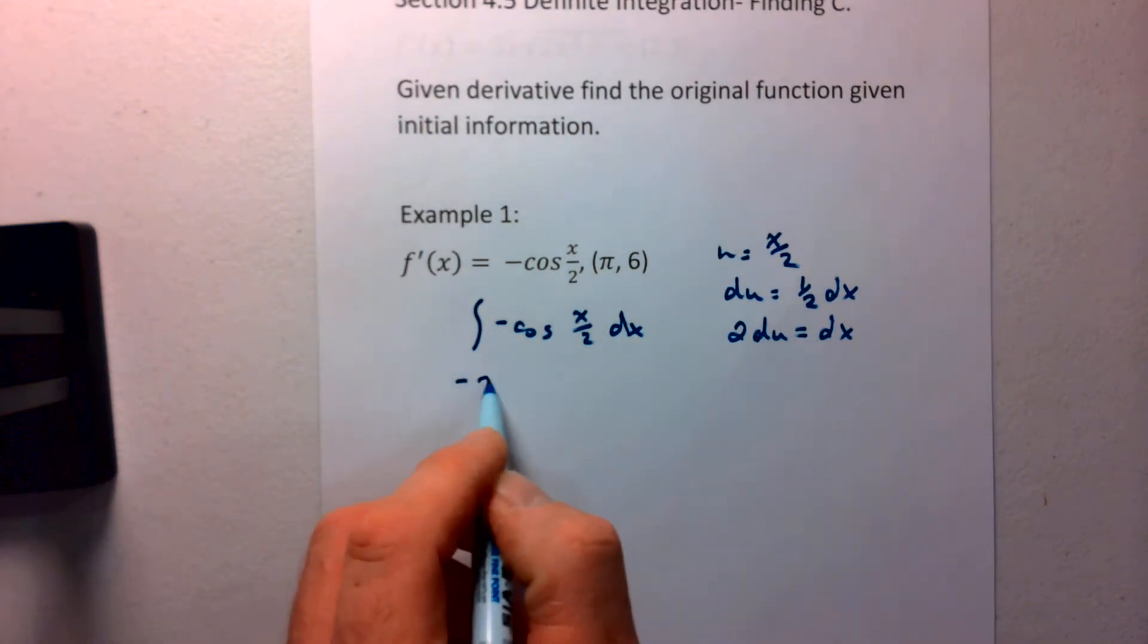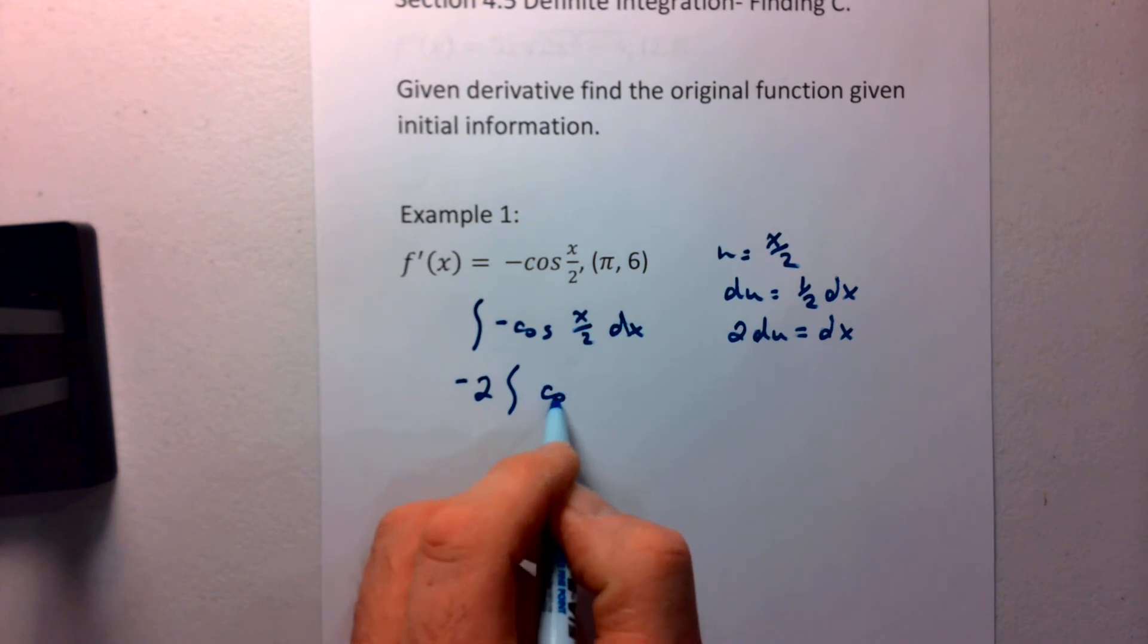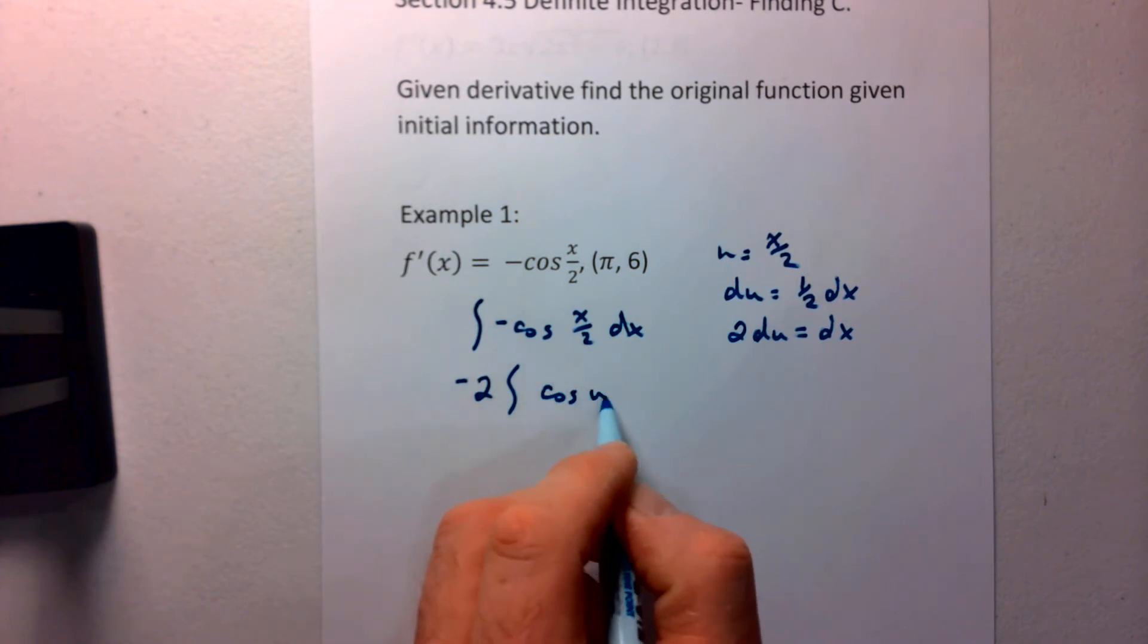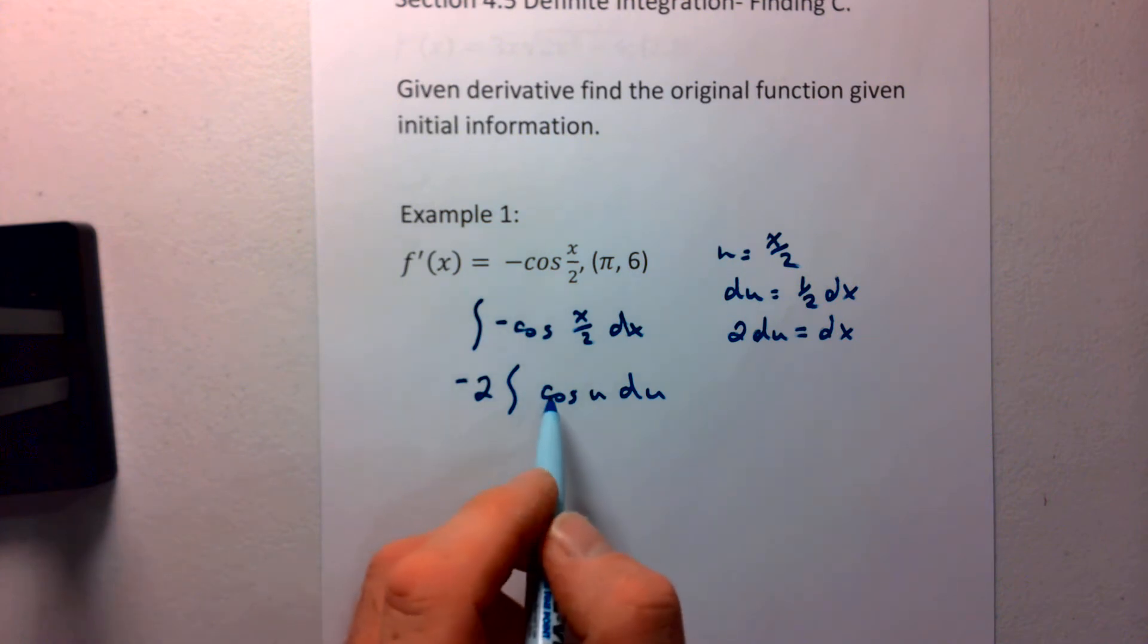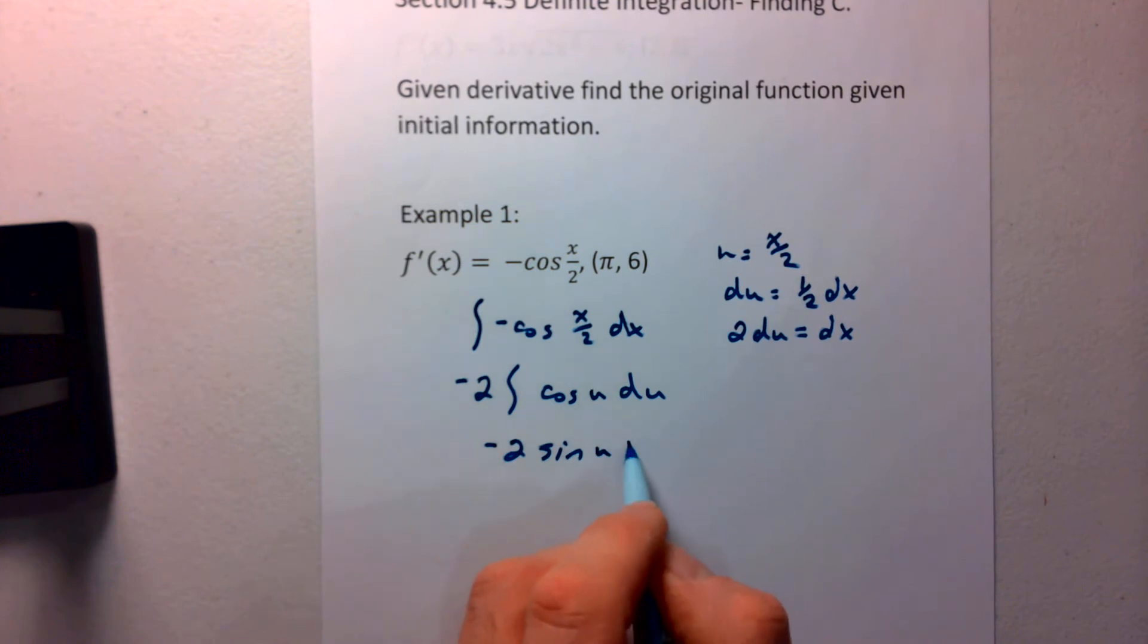Go ahead and bring that in. So we get negative 2 integrations of the cosine of u du. The integration of cosine is, you guessed it, sine of u plus c.